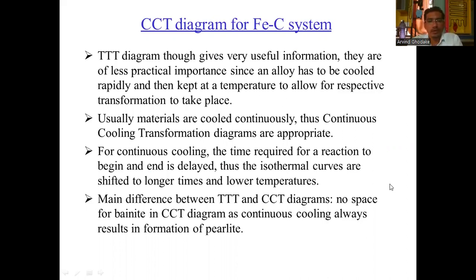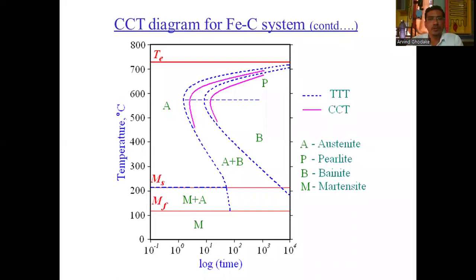The main difference between TTT and CCT diagrams is that there is no bainite region in the CCT diagram, as continuous cooling always results in the formation of pearlite. This diagram represents the CCT diagram for the Fe-Fe3C system. On the x-axis there is time on a logarithmic scale, and on the y-axis there is temperature in degrees Celsius. The dotted blue lines in the diagram represent the TTT (time-temperature transformation) curves.